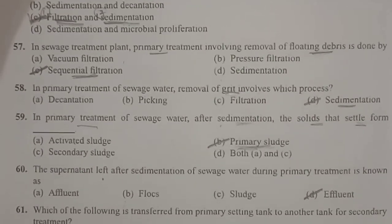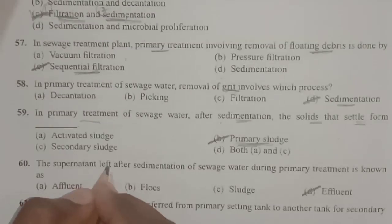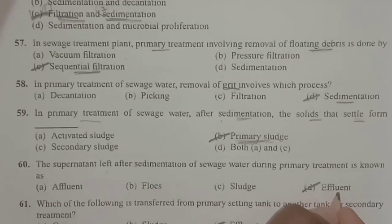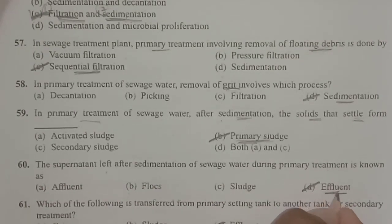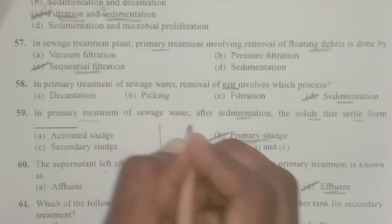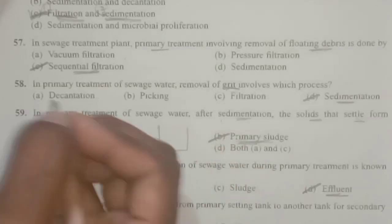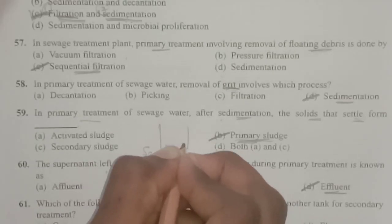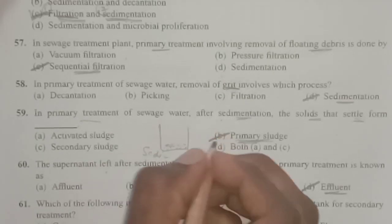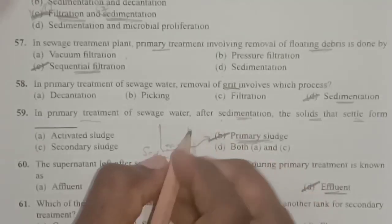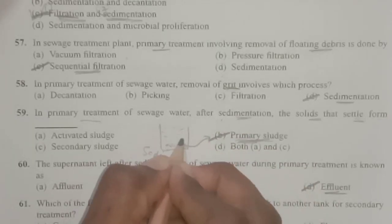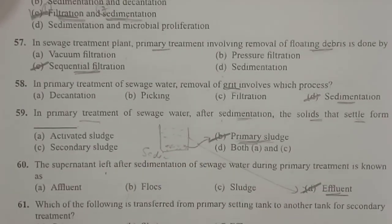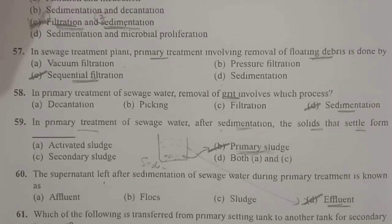Next: the supernatant left after sedimentation of sewage water during primary treatment is known as primary effluent. During filtration, all floating debris is removed. Then in the sedimentation tank, soil and grit particles settle at the bottom — these are known as primary sludge. The remaining supernatant floating above is known as primary effluent.